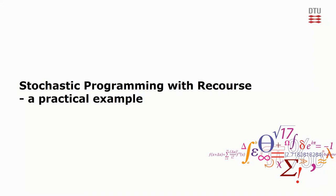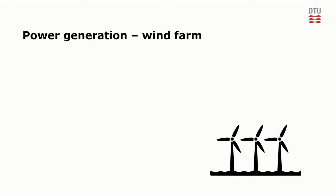This video presents a practical application of stochastic programming with recourse. It has been decided that a particular city should transform its energy consumption to green energy. To do that, two new wind farms will be constructed. For each of these wind farms, it must be decided how many windmills should be constructed.